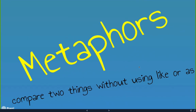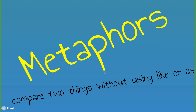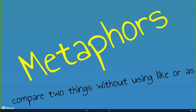A metaphor is similar to a simile in that we're also comparing two things that are not usually compared, but we're not using the words 'like' or 'as.' A metaphor is a more direct comparison, typically using the words 'is' or 'are.' If it uses 'like' or 'as,' it's automatically a simile; if it uses 'is' or 'was,' it's a metaphor.